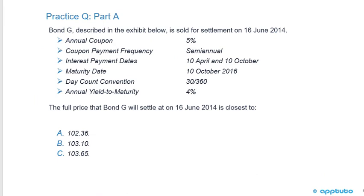We'll finish this LOS with two practice questions. Bond G is sold for settlement on the 16th of June 2014. The annual coupon is 5%, semi-annual frequency, with interest payment dates on the 10th of April and 10th of October. The maturity date is the 10th of October 2016. The day count convention is 30/360, and the annual yield to maturity is 4%. The question asks: what is the full price bond G will settle at on the 16th of June 2014? Closest to A) 102.36, B) 103.10, or C) 103.65.